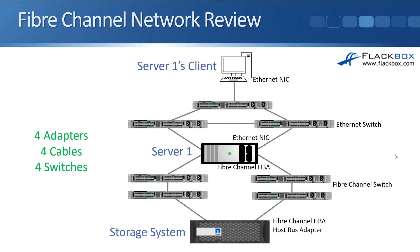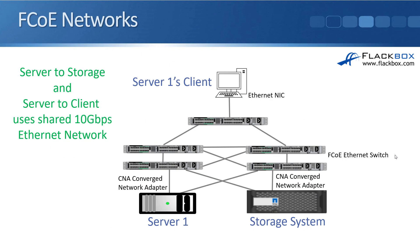So you've got four adapters, four cables, and four switches. The big benefit with FCoE is that the infrastructure gets cut down in half. Because you're running both the data and the storage over the same network infrastructure, the NIC and the HBA, which were separate before, are now replaced with a single CNA — a converged network adapter. A converged network adapter looks just like a normal network card, but it's a special card that supports FCoE. So now we've got two adapters, two cables, and two switches. We've cut the infrastructure down in half, and you can see that can have really good cost benefits.